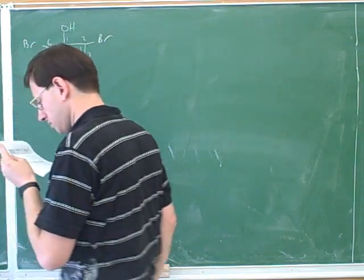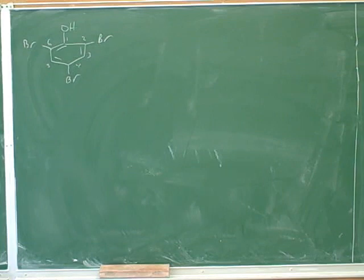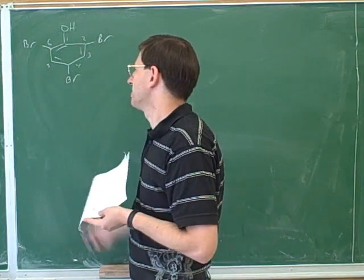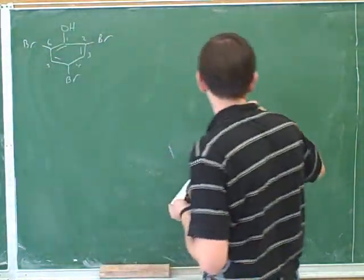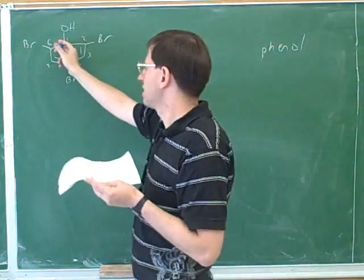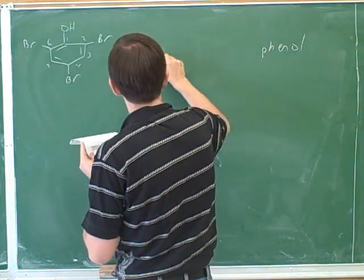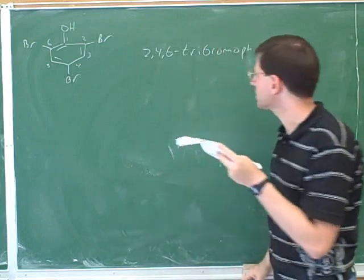The correct name is 2,4,6-tribromophenol. I had the wrong numbers initially — counting around the ring gives positions 2, 4, and 6. OH has a common name, which is phenol, so it gets the number one carbon. It doesn't matter whether you number down the right or left because this molecule is symmetric. So it would be 2,4,6-tribromophenol, all one word.